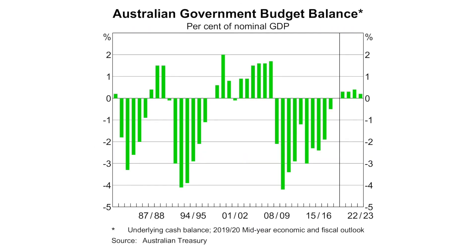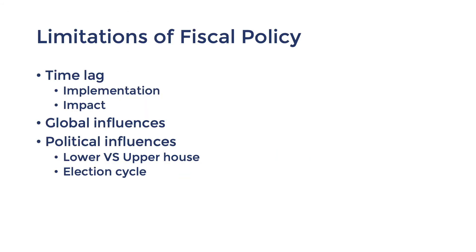It's also worth noting that the road to fiscal consolidation has not been smooth. In 2014, the budget deficit was nearly doubled despite the strong focus on trying to reduce it. This setback was a culmination of some of the above limitations, including slow global economic growth and the Australian Senate rejecting some of its proposed spending cuts and taxes.